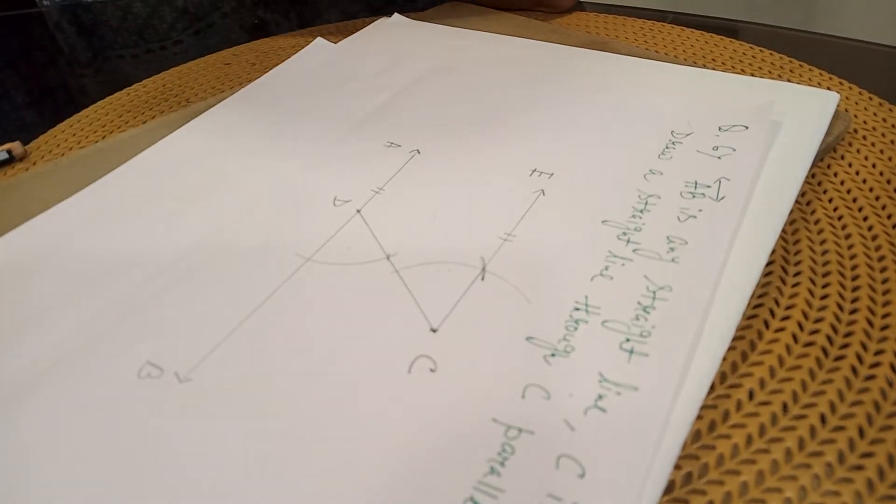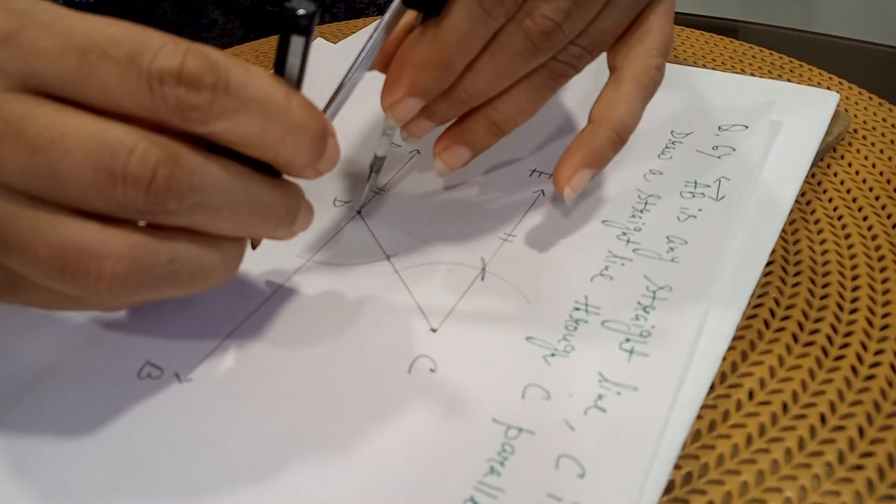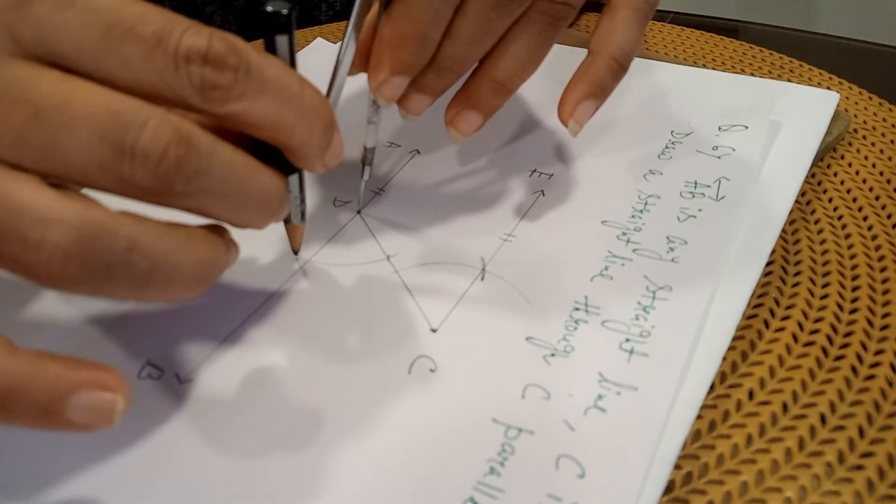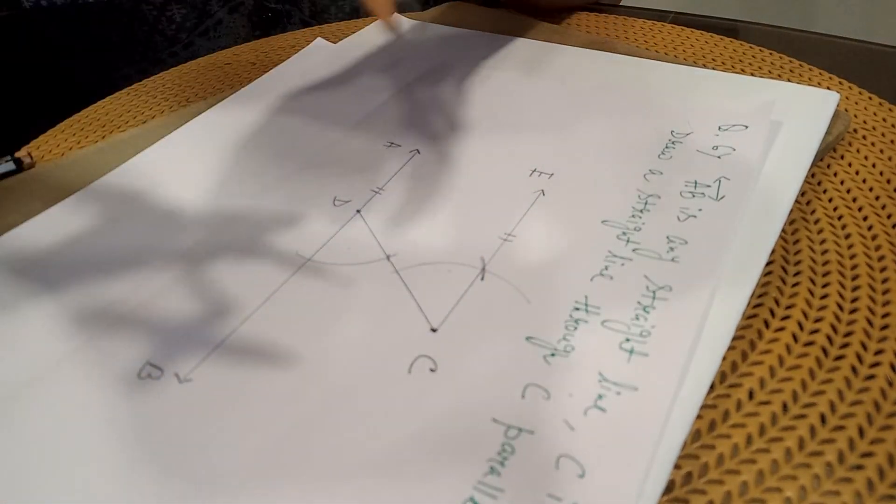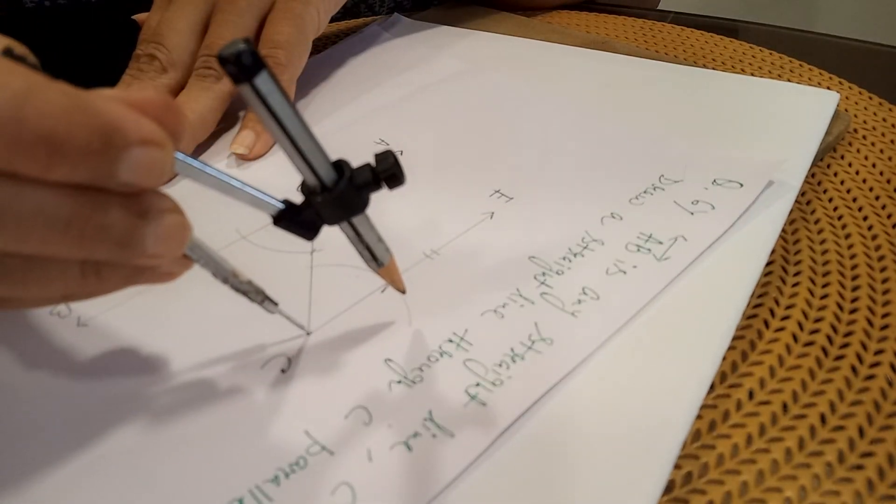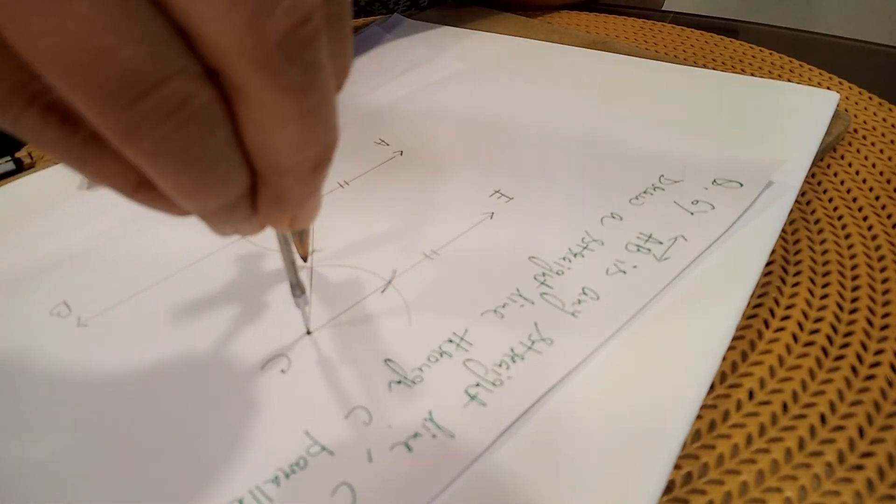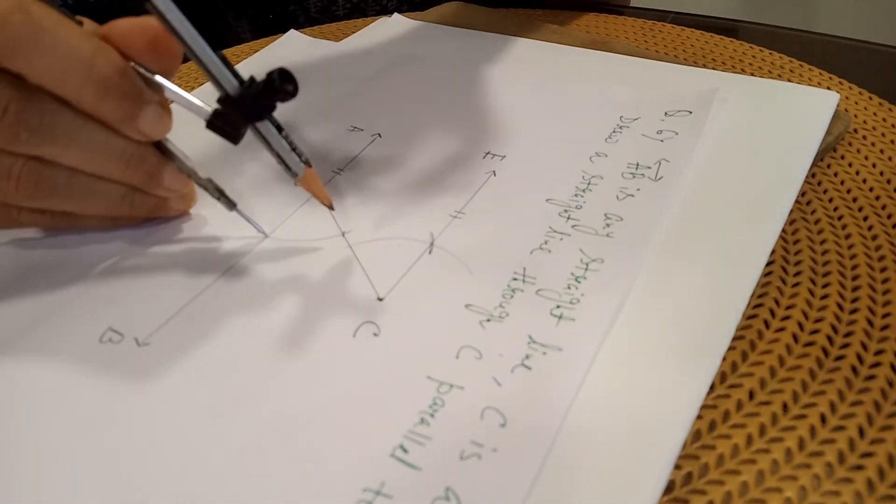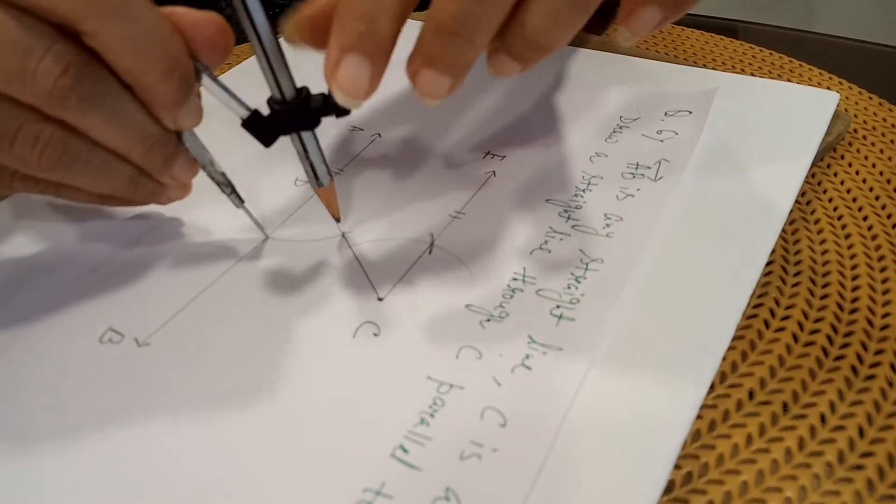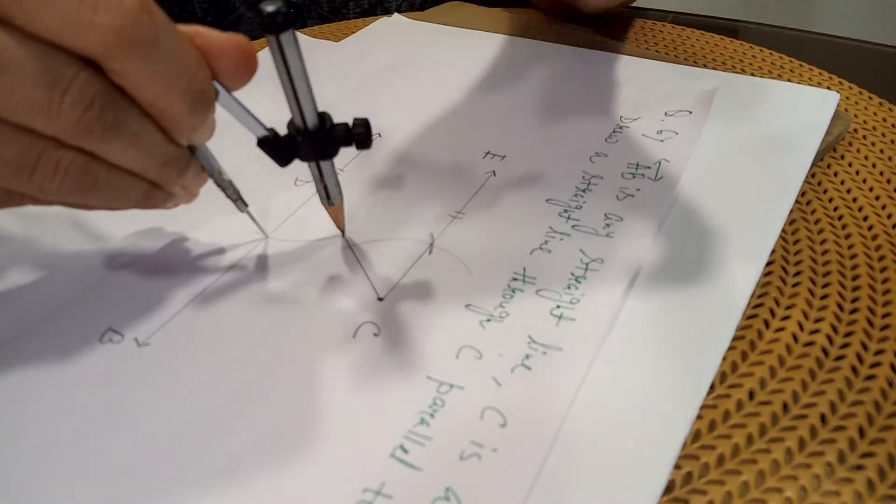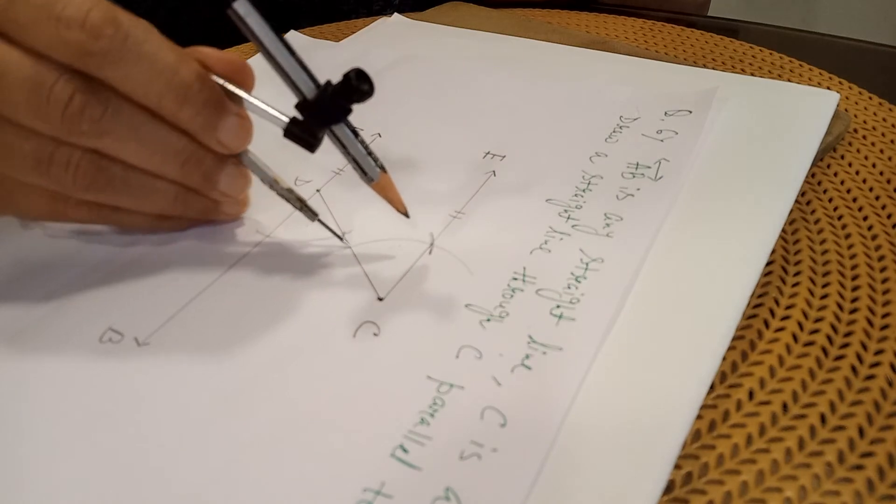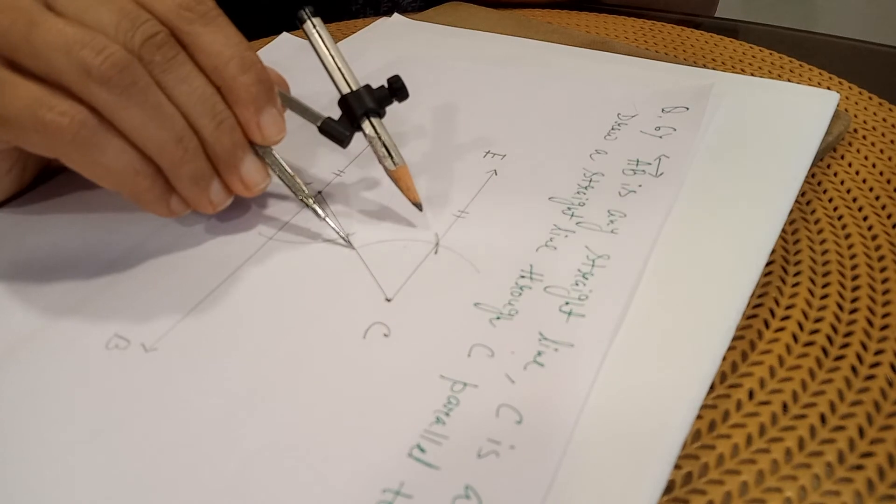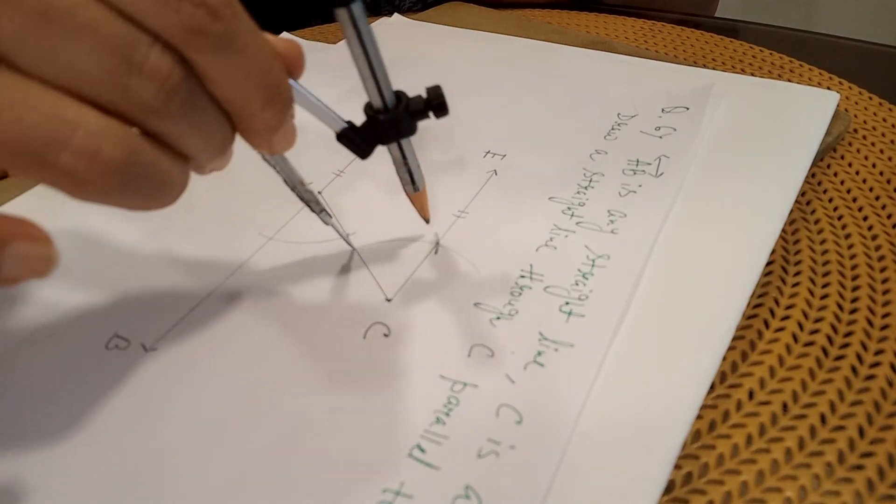Then, with the help of compass, I have drawn one arc of any measurement. Then, I have placed my compass at C. With the same measurement, I have drawn the arc. Then, I have taken the inside measurement. In this way, you will take. Then, you will place here. Be careful. Where to place? Place over here. Then, draw this arc.